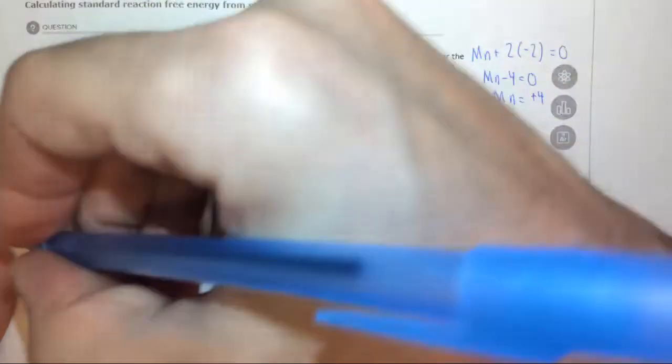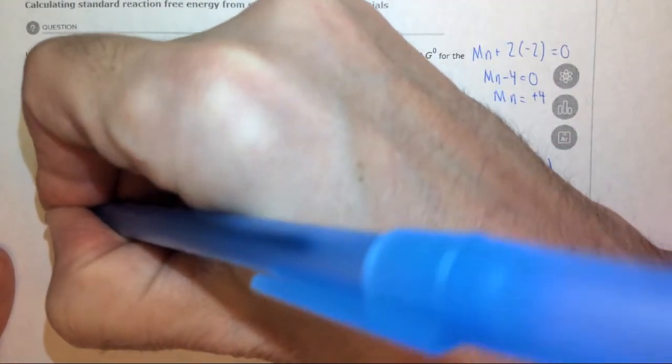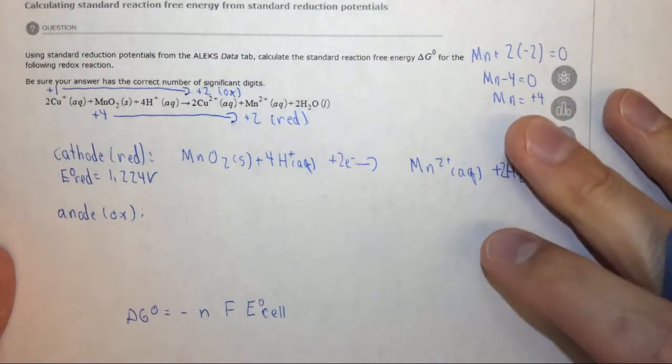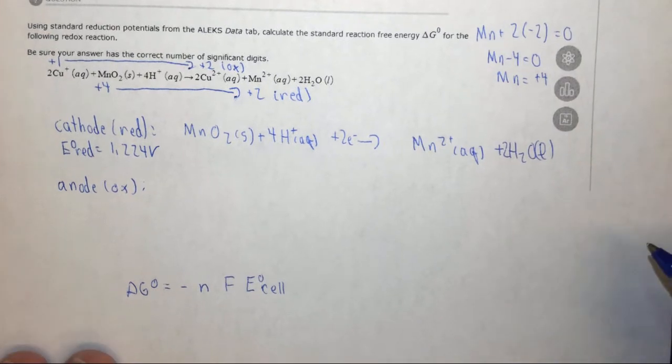Now let's look at the anode. And at the anode oxidation is occurring, or electrons are being pushed out of there, or it's losing electrons.